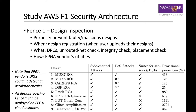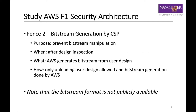If a design passes this fence, it can be deployed directly on FPGA cloud instances. This table shows some self-oscillating designs that could pass this fence, and whether they are suitable for several types of attacks. Some designs are not suitable for DoS because the power gain is not enough to break the upper power limit. After design inspection, AWS will generate a bitstream from user designs, and the generated bitstreams are not exposed to users, which prevents bitstream manipulation even though the bitstream format is not publicly available.